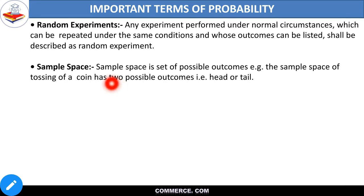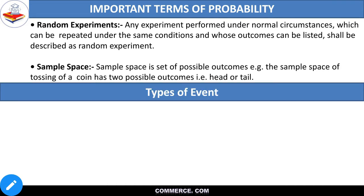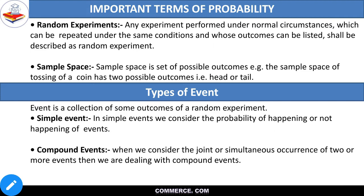What is the sample space? It is a set of possible outcomes. When you toss a coin, you have two possible cases: head or tail. If you talk about cards, there are 52 cases — any card can come from the 52. So we call the total sample space the set of how many outcomes can come. And an event is a collection of some outcomes from your total sample space — like head or tail, these are all our events.